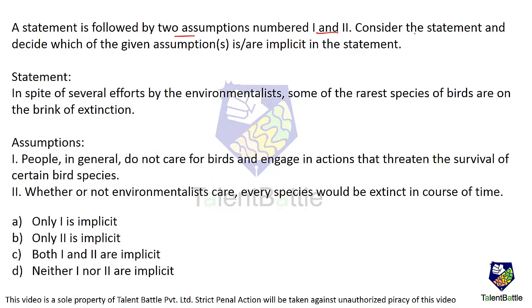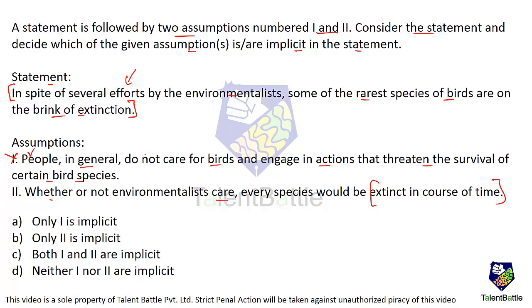A statement is followed by two assumptions numbered 1 and 2. Consider the statement and decide which assumptions are implicit. Statement: In spite of several efforts by environmentalists, some of the rarest species of birds are on the brink of extinction. Assumption 1: People in general do not care for birds and engage in actions that threaten certain bird species. Extinction of birds might be because of many reasons — it is not compulsory that people's actions are causing it, so this is not implicit. Assumption 2: Whether or not environmentalists care, every species would be extinct in course of time. Nowhere in the statement is this mentioned. Thus, neither one nor two are implicit.